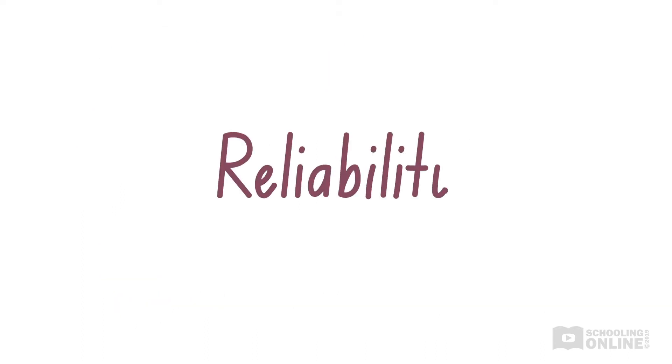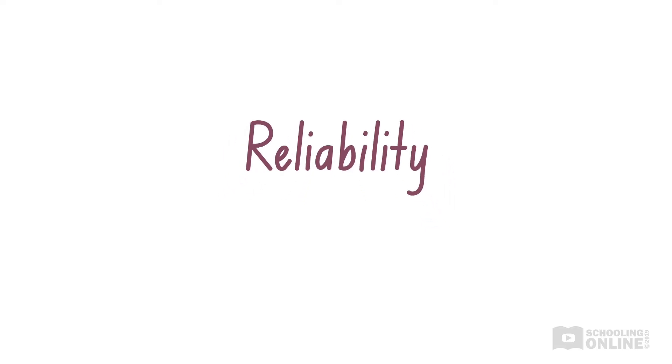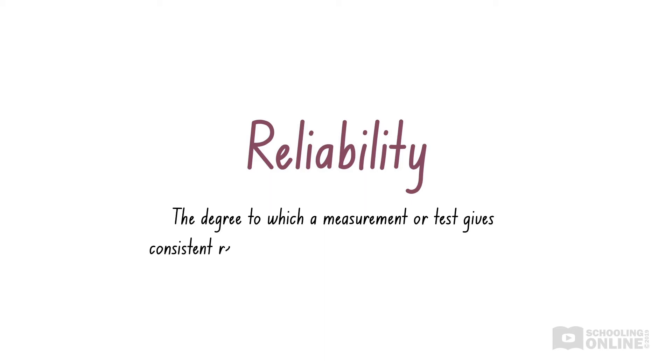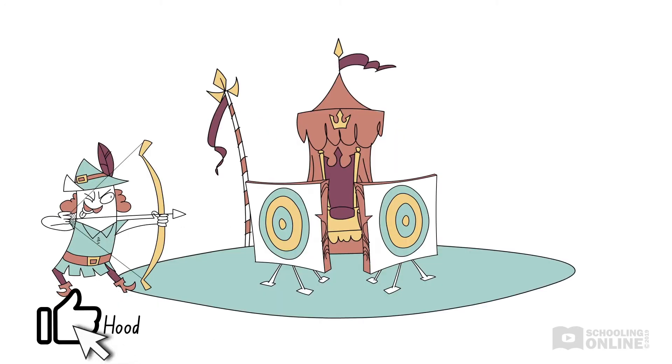Do you remember the definitions from our first video on reliability? Reliability is the degree to which a measurement or test gives consistent results each time the experiment is performed. For example, Robin Hood is a reliable archer since his arrows consistently land close to each other.